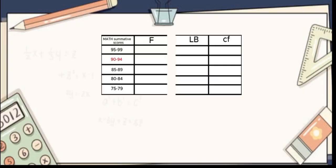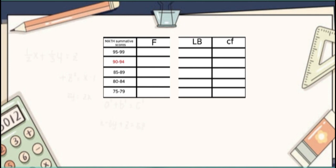It is grouped data, so there's a table. The first column are the math summative scores in interval form. The second column contains the frequency. The third column is for the LB or the lower boundaries, and the last column is the CF, which means cumulative frequency.